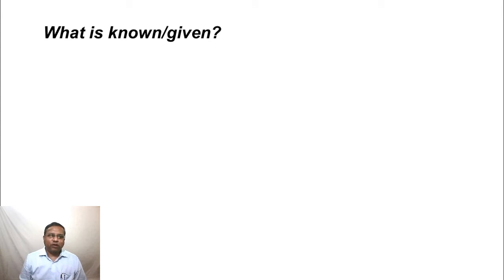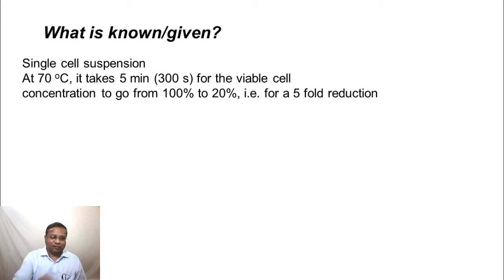What is known or given? We know that it is a single cell suspension. And also, we know that at 70 degrees C, it takes 5 minutes or 300 seconds for the viable cell concentration to go from 100 percent to 20 percent. Or in other words, a 5-fold reduction takes that 300 seconds. Please see that I have converted this 5 minutes into 300 seconds. It is usually good to work in a consistent system of units, whatever that might be. And for the purposes of this course, we will mostly use the SI units. And that is the reason why I have converted 5 minutes to 300 seconds. It is good to do this a priori, beforehand, and then go about the actual solution.